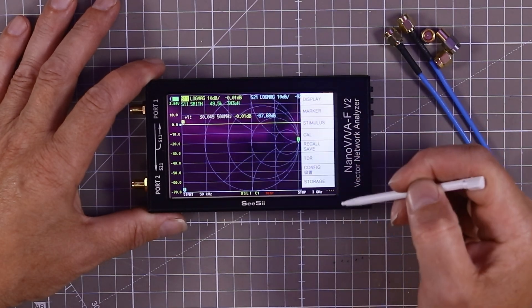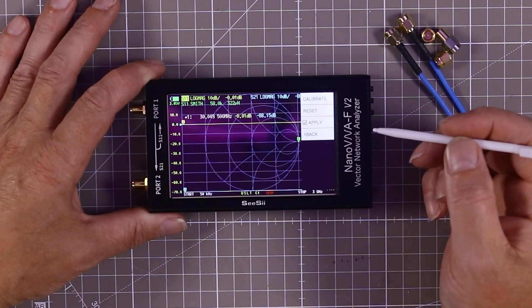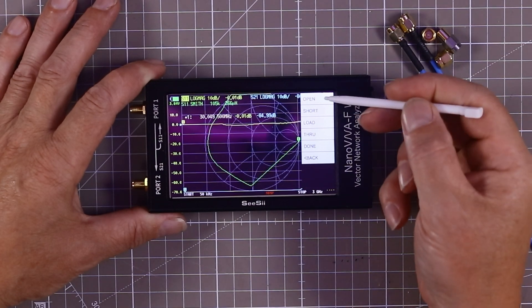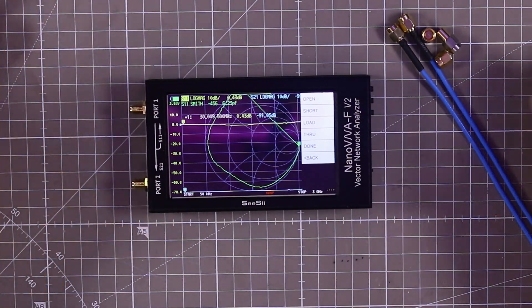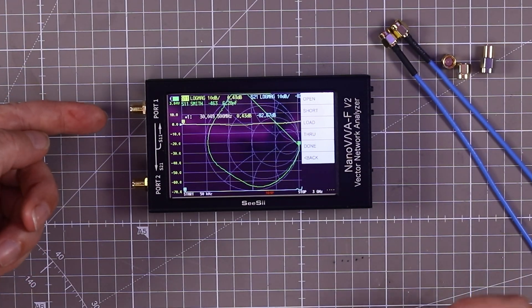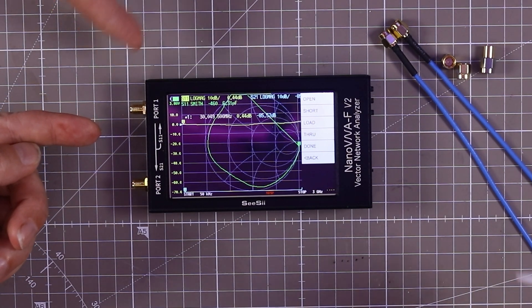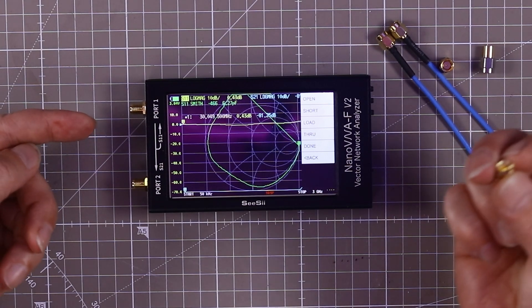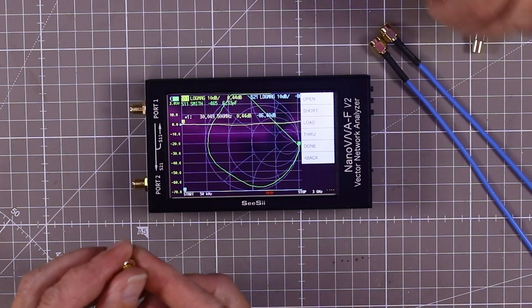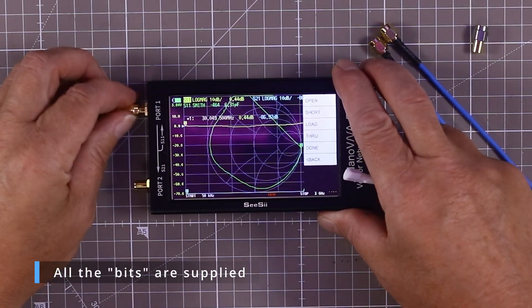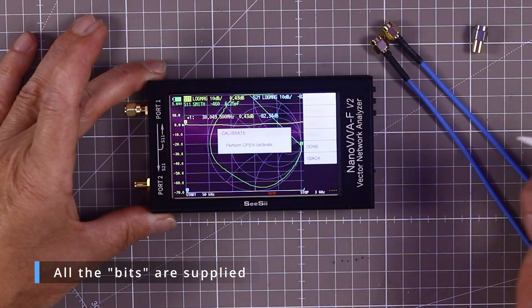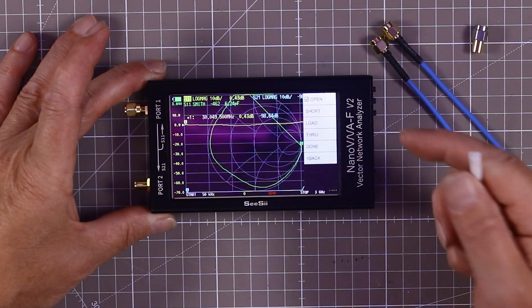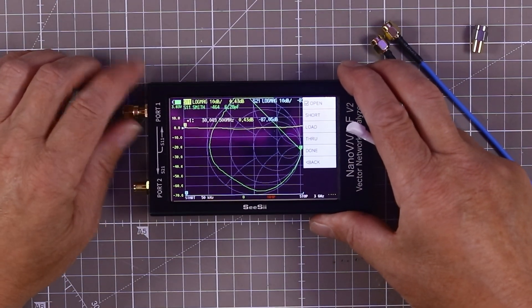All right, so to calibrate it, touch anywhere on the screen. You'll get the menu come up, you hit the Cal button, then you hit the Calibrate button, and then you follow the on-screen instructions. Now it's asking me to put an open connector on it. Don't leave it open - I'm going to put something on. You have to put the capping on it because even though there's no center pin on it, it stops any spurious stuff.